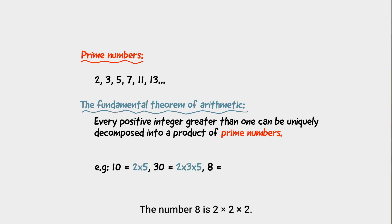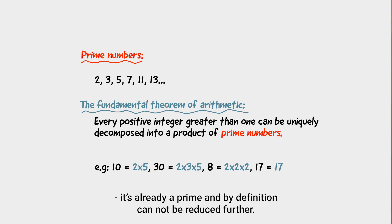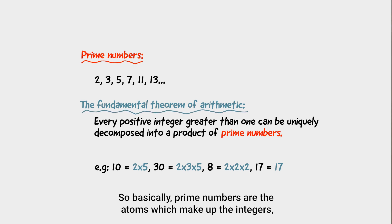The number 30 is 2 times 3 times 5. The number 8 is 2 times 2 times 2. The number 17 is, well, 17. It's already a prime and so by definition cannot be reduced further. So basically, prime numbers are the atoms which make up the integers.